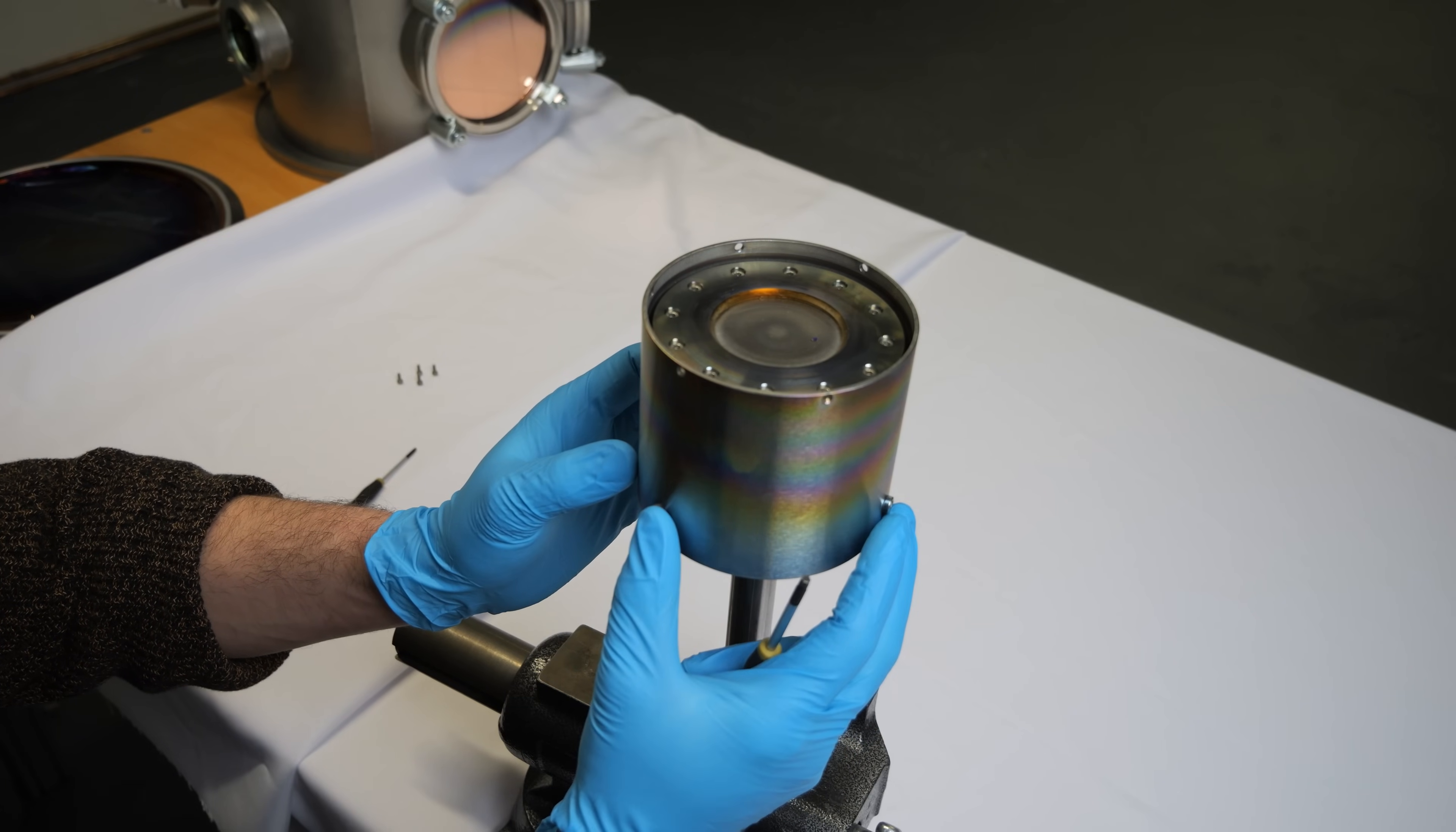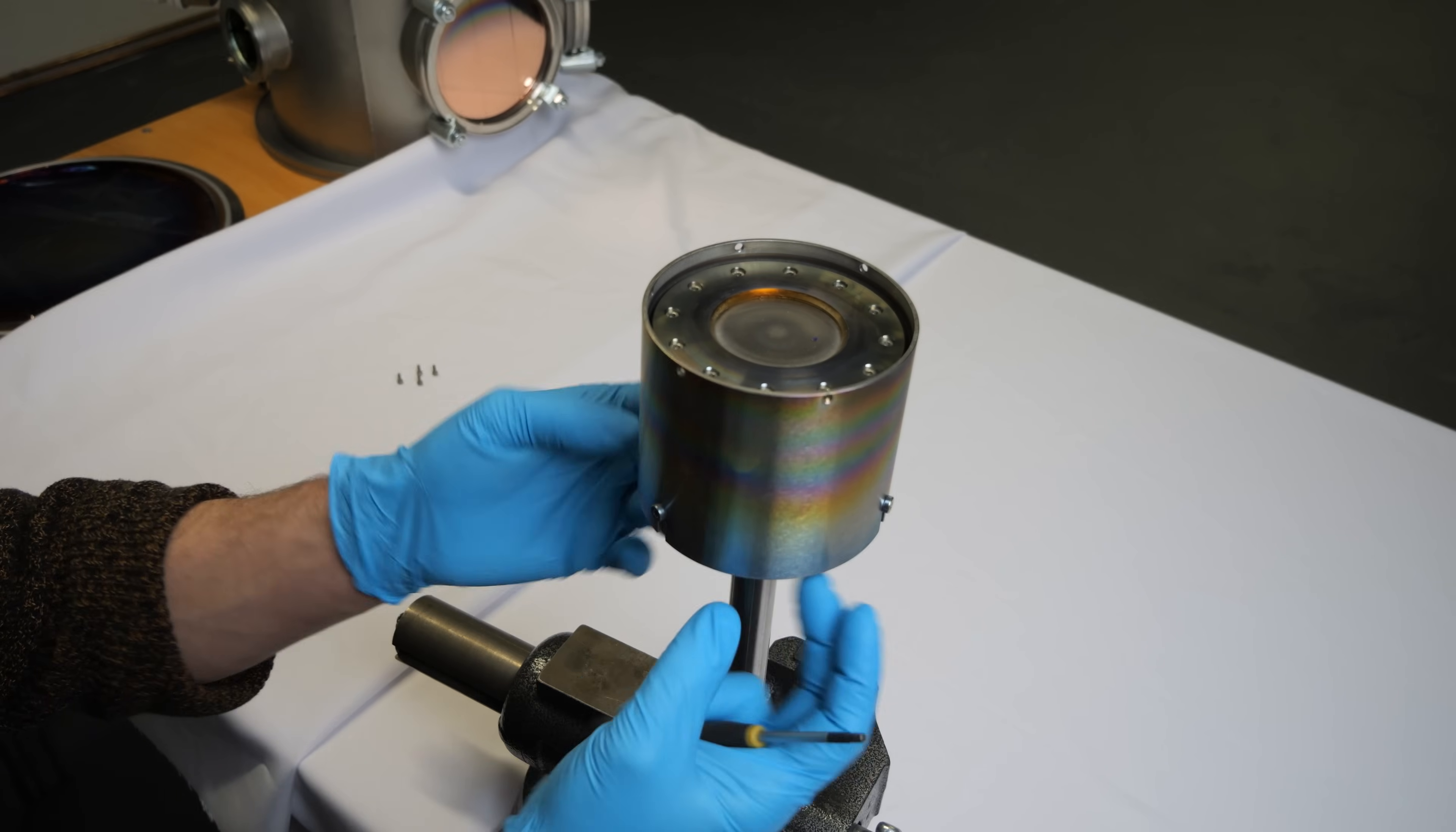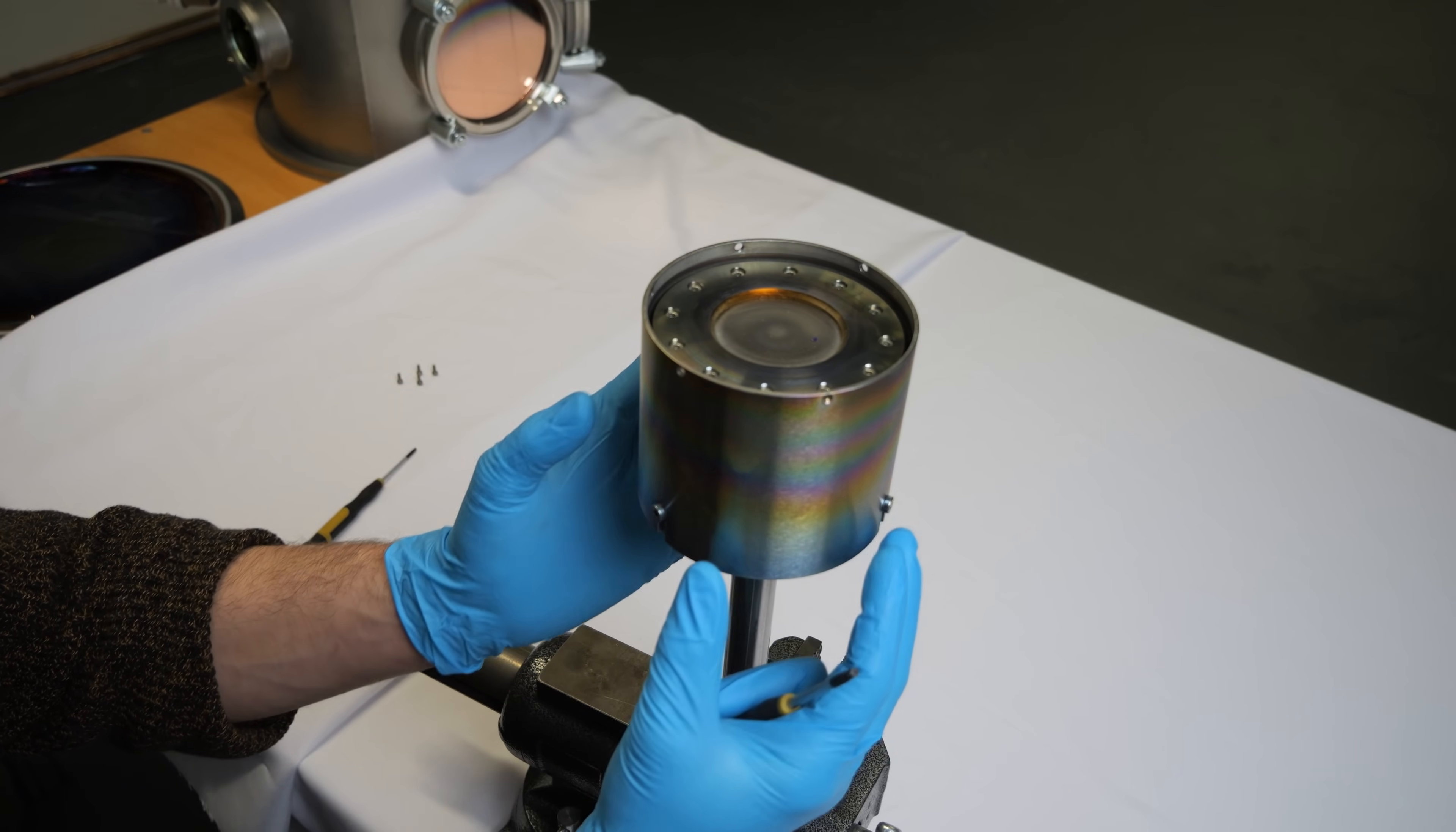This outer tube of the ground shield is only clamped down with three screws. The reason is that it would interfere with the other screws at the bottom here if I would have added more.